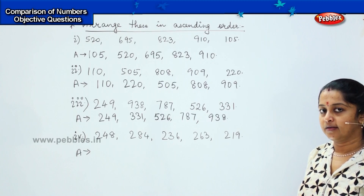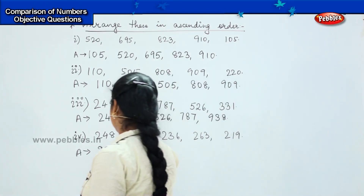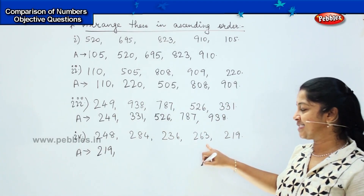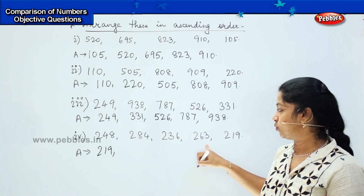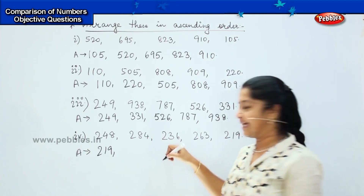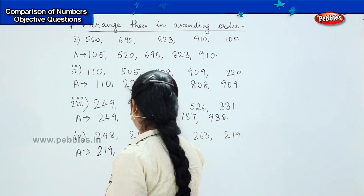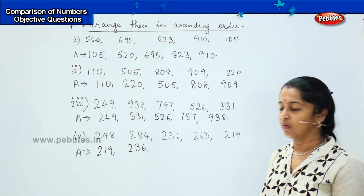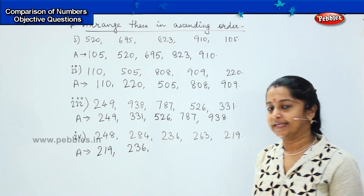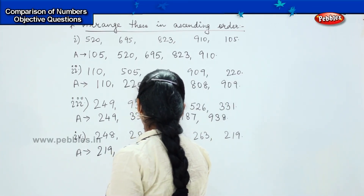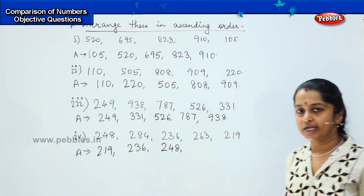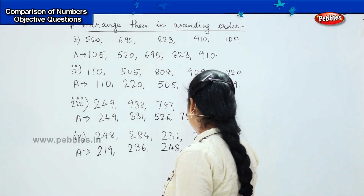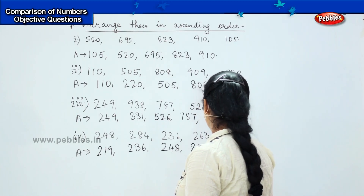So which is the first one? It is 219. What is the next one after that? Is it 263? No. Is it 236? Yes. So the next number is 236. What is the number after that? Is it 248? Yes. So the next number is 248. What will come after 248? It is 263, and the final one is 284.